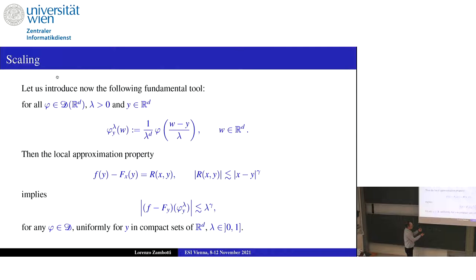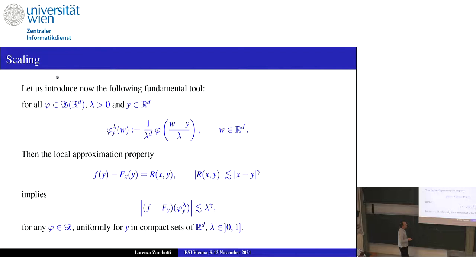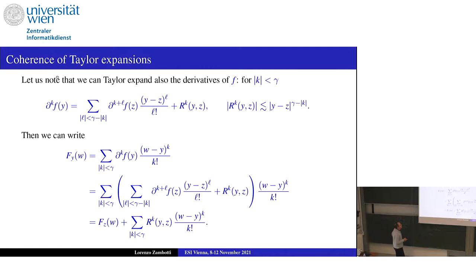Another key formula involves the difference between two Taylor expansions based at z or y, tested against the test function scaled at y. You have the inequality |(F_z minus F_y)(phi^lambda_y)| ≲ |z minus y|^{gamma minus alpha} · lambda^alpha. This property is called coherence.